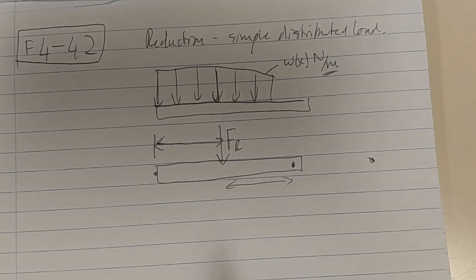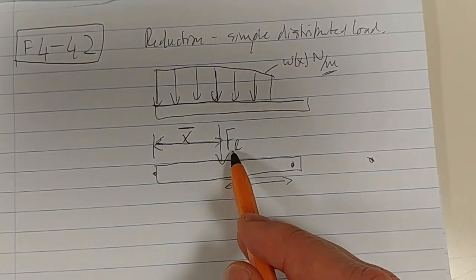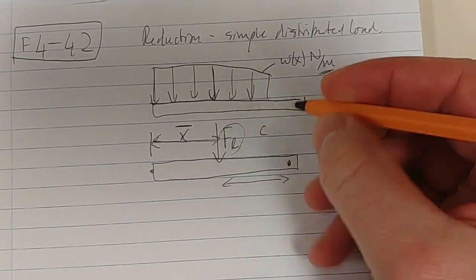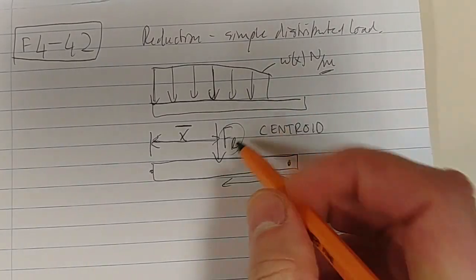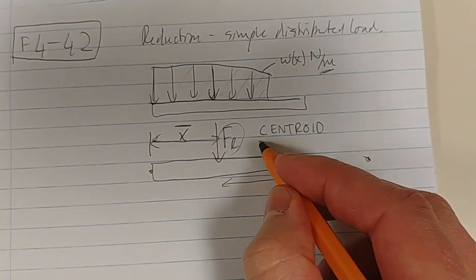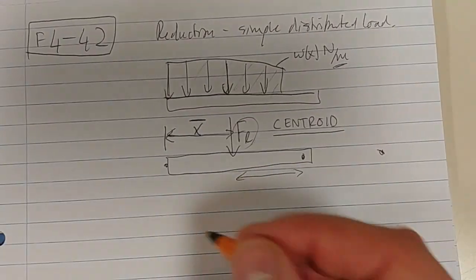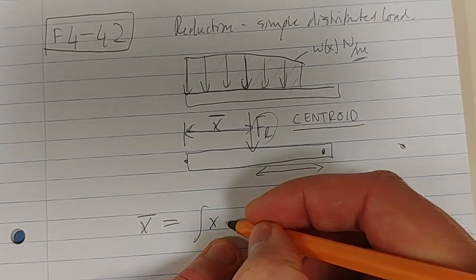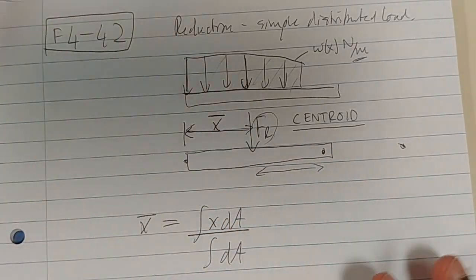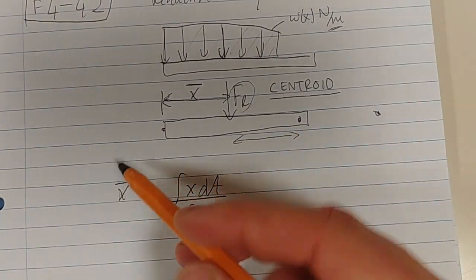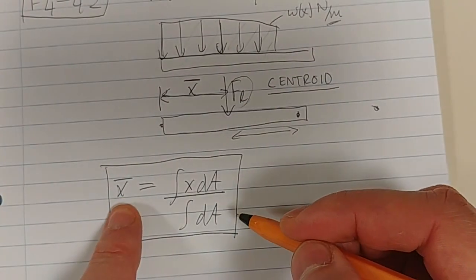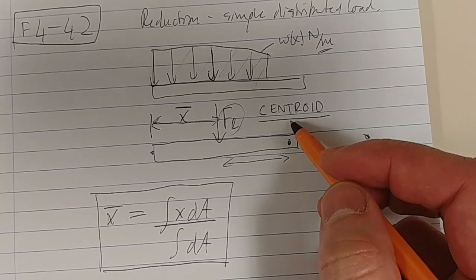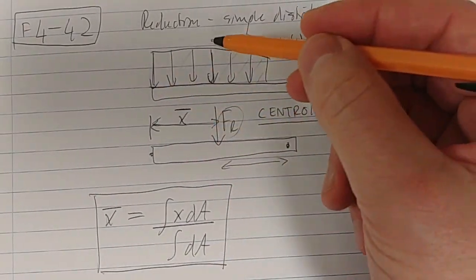This is what I've actually forgotten to mention in the previous videos which is crucial. The positioning of this resultant force is always in the centroid. It always passes through the centroid of this area. That is very key. So this equation that we use, x̄, to determine the positioning, which is equal to ∫x dA over ∫dA, this equation essentially tells us the position of the centroid.